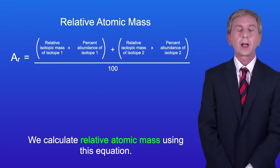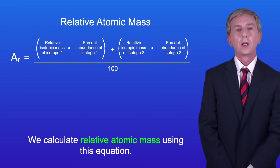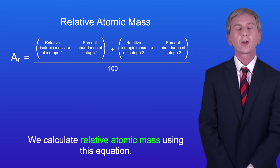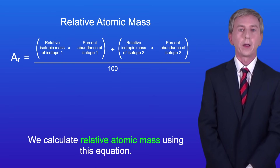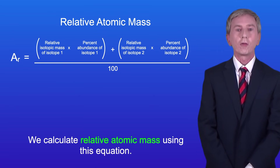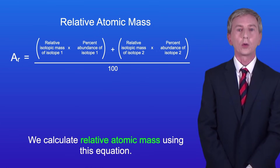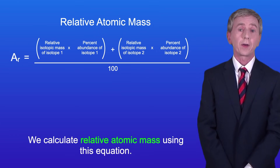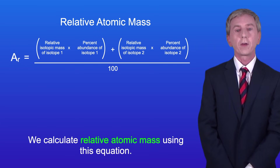We calculate relative atomic mass using this equation. Relative atomic mass equals the relative isotopic mass of isotope 1 multiplied by the percent abundance of isotope 1, added to the relative isotopic mass of isotope 2 multiplied by the percent abundance of isotope 2, and then all divided by 100.